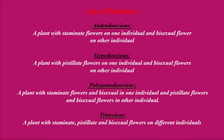Androdioecious: a plant where staminate flowers are present in one individual of a species and bisexual flowers are present in another individual of the same species. Those plants are called androdioecious. Next is gynodioecious: a plant with pistillate flowers in one individual of a species and bisexual flowers in another individual of the same species. Then it is called gynodioecious.